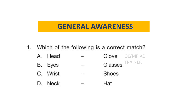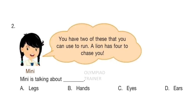Question 1: Which of the following is a correct match? Answer is option B — Eyes, Glasses. Question 2: Mini, you have 2 of these that you can use to run. A lion has 4 to chase you. Mini is talking about... Answer is option A — Legs.